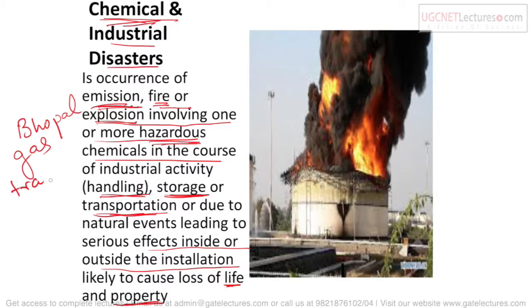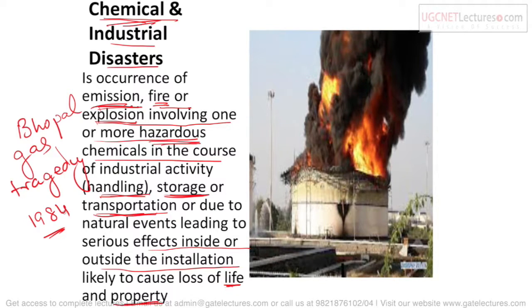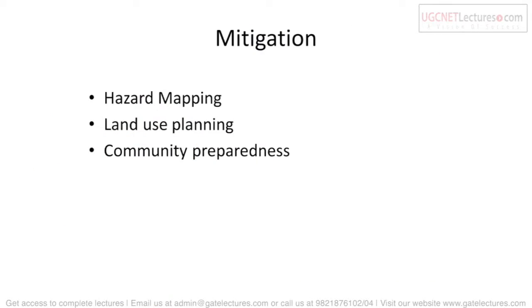The Bhopal Gas Tragedy happened in 1984. At the Union Carbide chemical factory in Bhopal city, a gas leakage occurred which killed many people and left many physically handicapped and challenged.